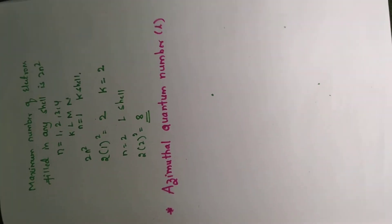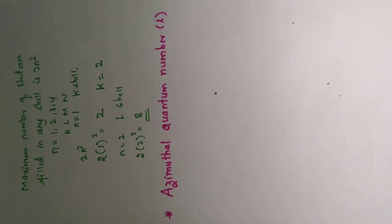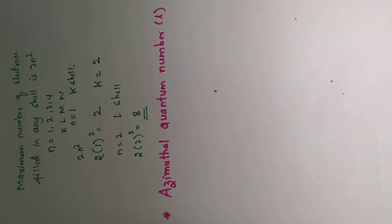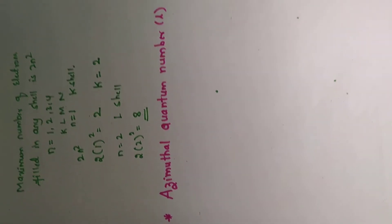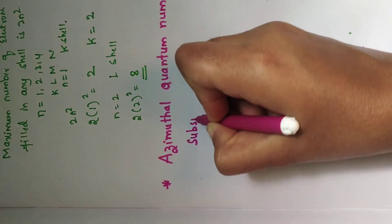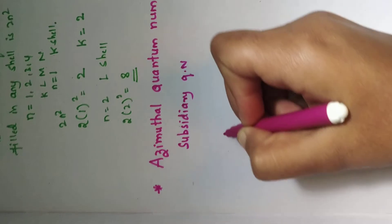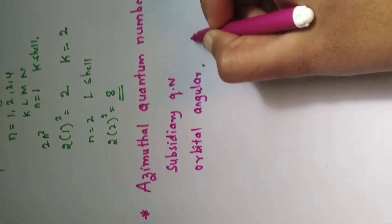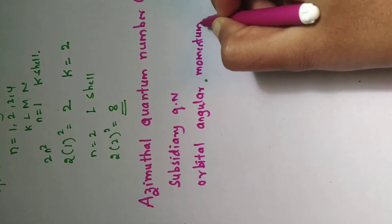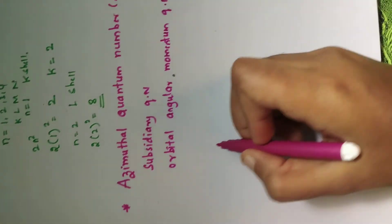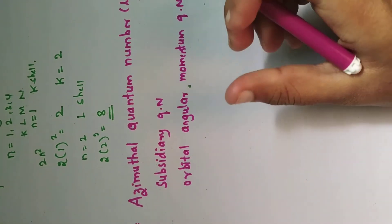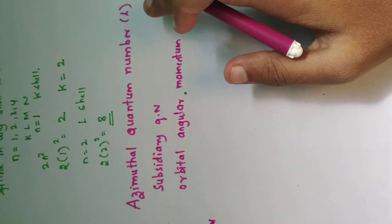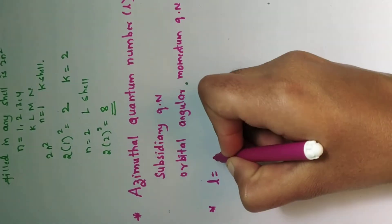Now we shall study the second quantum number, that is the azimuthal quantum number. It is also called the subsidiary quantum number or orbital angular momentum quantum number. Angular momentum is the quantity of rotation of the body. The azimuthal quantum number is represented by l.